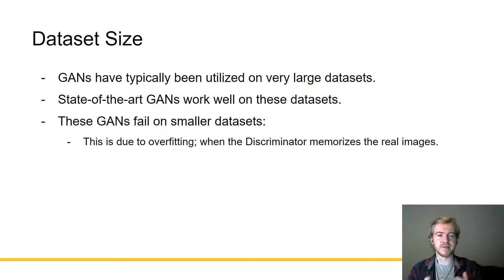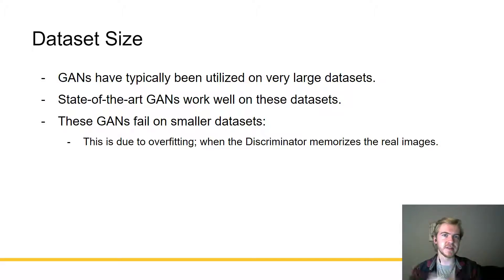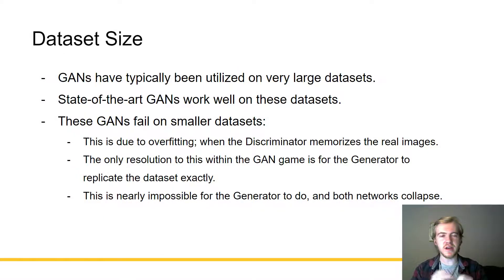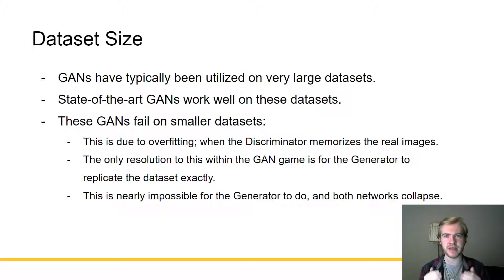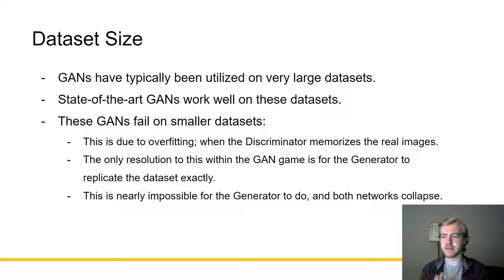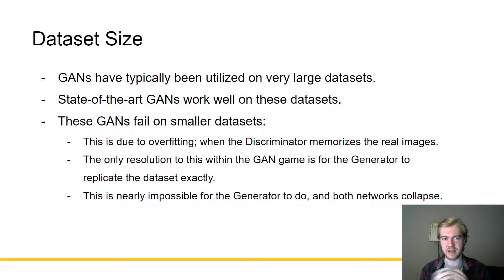This is due to overfitting. As the discriminator learns, it will also learn to memorize the real images if there are not a sufficient amount of real images to be learned. The only resolution within the GAN game — within the generator-discriminator competition — is for the generator to completely replicate the data set exactly. This is nearly impossible for the generator to do, and both networks will eventually worsen and hamper performance until they collapse.